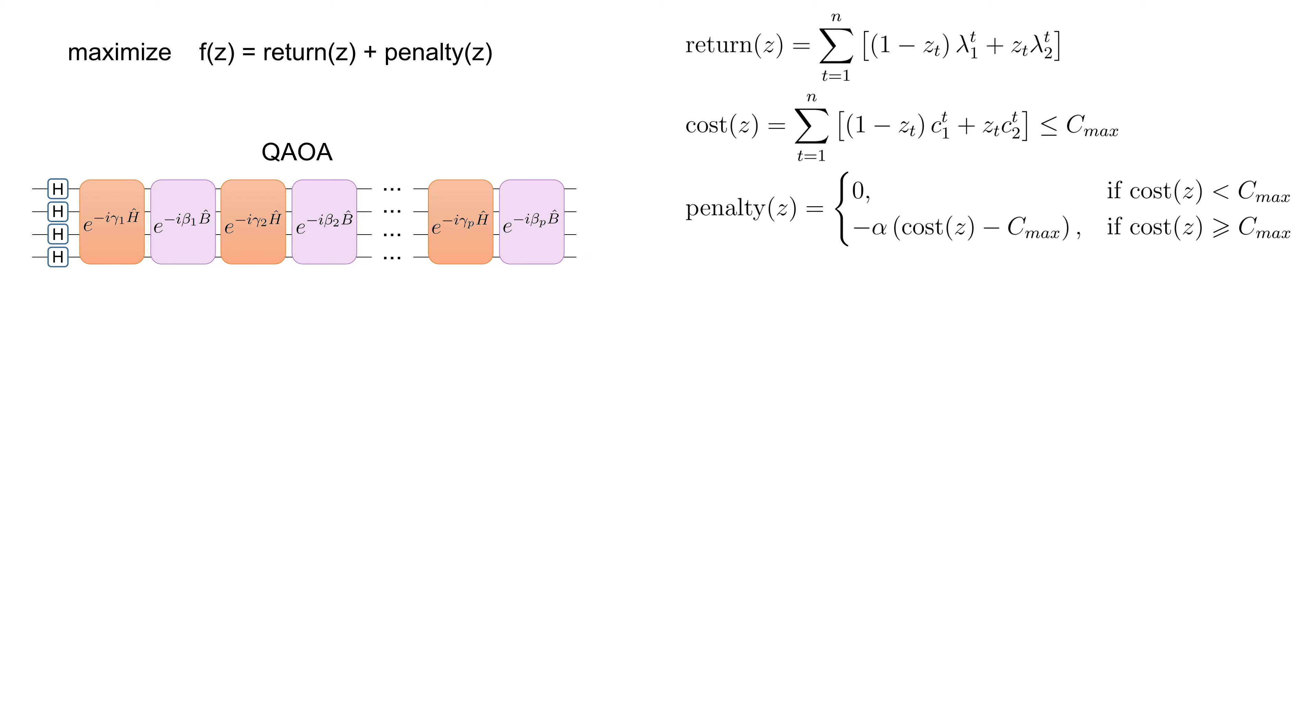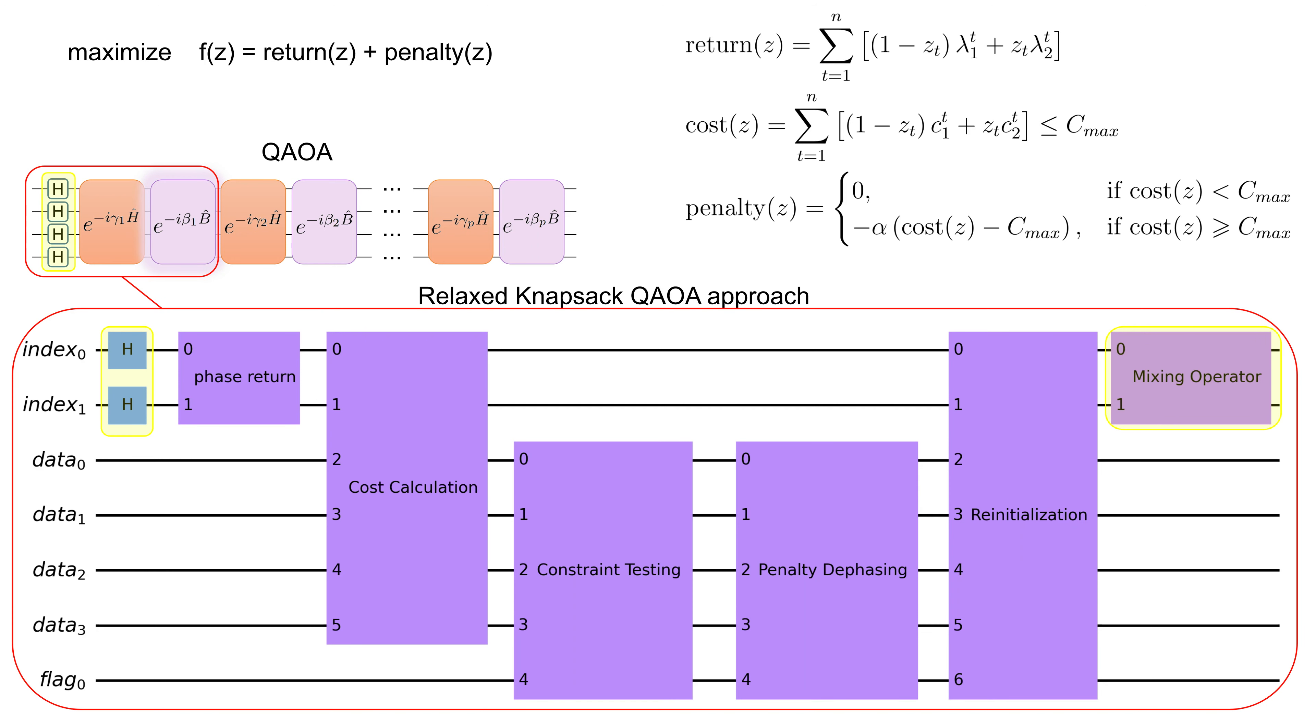So, how to apply QAOA for the Knapsack problem? Let's consider the building blocks. First, we can still keep the Hadamard gates and the mixer.